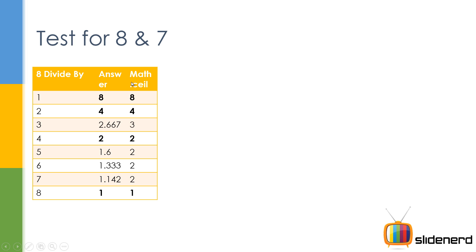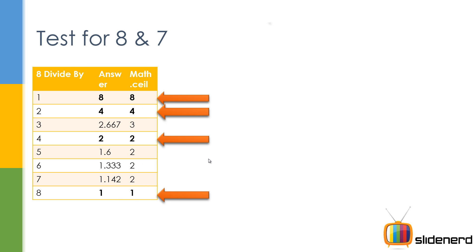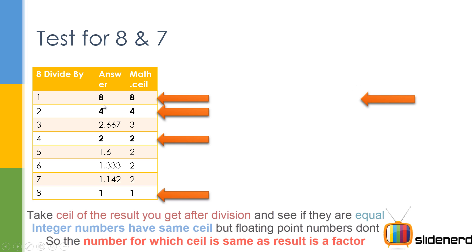So I'm using Math.ceil for the answers: 8 is rounded to 8, 4 is rounded to 4, 2.67 is rounded to 3, 2 is to 2, and 1.62 and similar values are rounded to 2. Here's the funny thing — notice: 8, 4, 2, 1. Four numbers that are perfectly divisible, or I should say their ceil is perfectly equal. Math.ceil of the answer and the answer itself are equal. So whenever this happens, that means the number is a factor — simple as that.